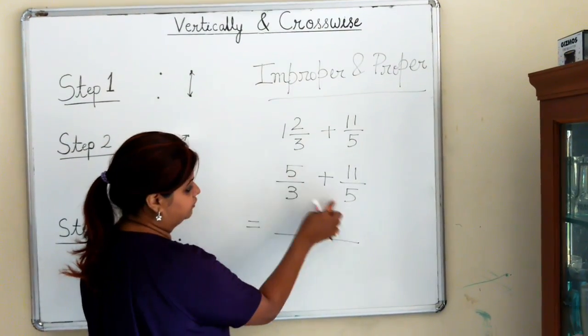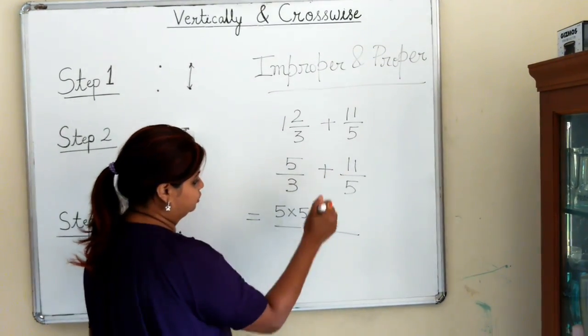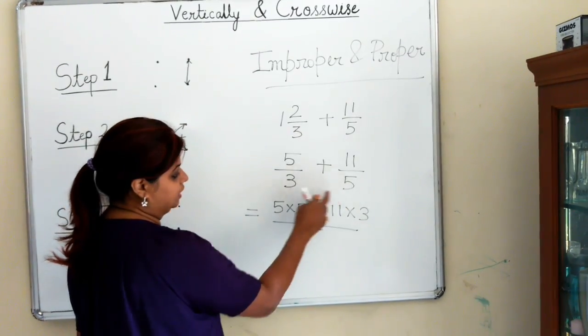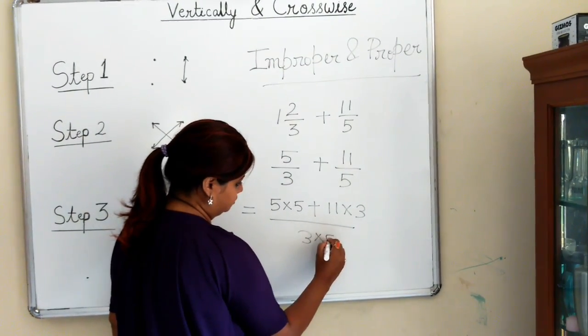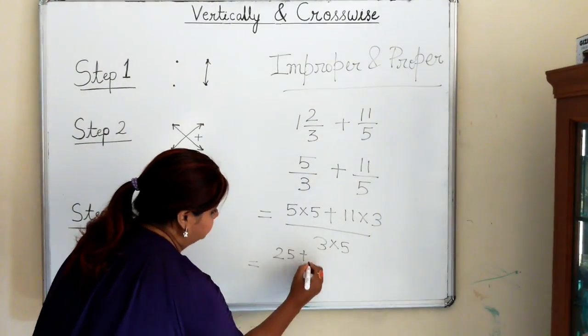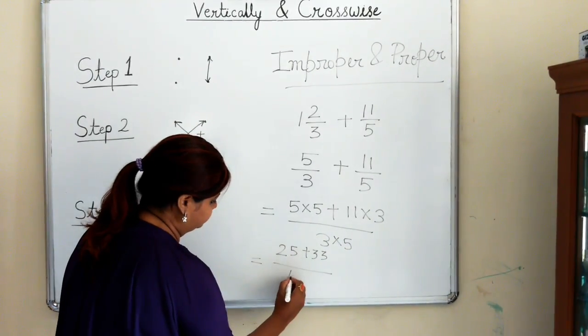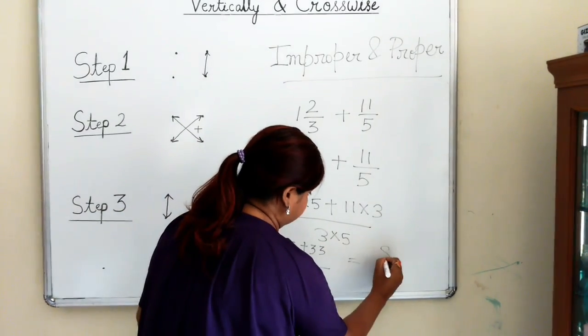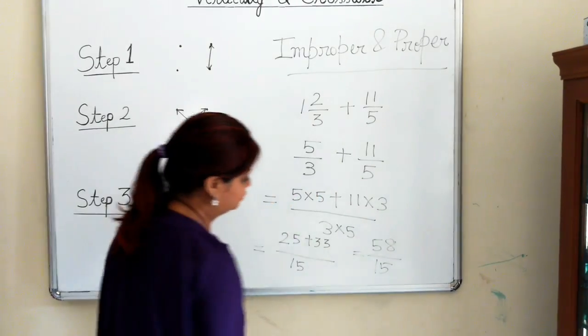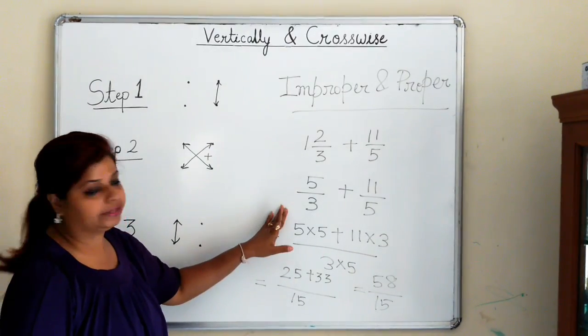You cross multiply 5 and 5. I'm writing 5×5 + 11×3. For the denominator, we multiply 3×5. 5×5 is 25, 11×3 is 33, and 3×5 is 15. 25+33 is 58, so we get 58/15. If you see, I added these two fractions in seconds without taking the LCM.